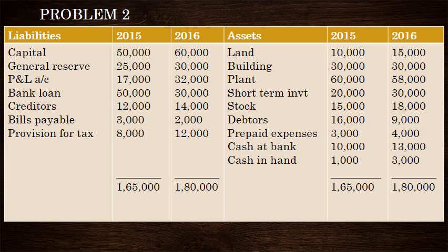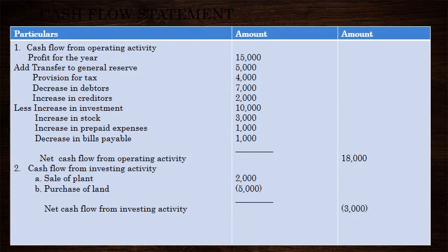Because we have an operating expense, we have a direct method to follow. We will use the indirect method. We will take a step to the next step. The 3rd is provided. Cash flow from operating activity — this is the indirect method.